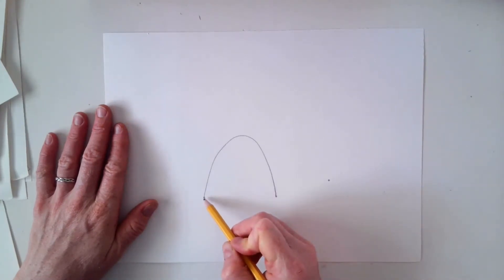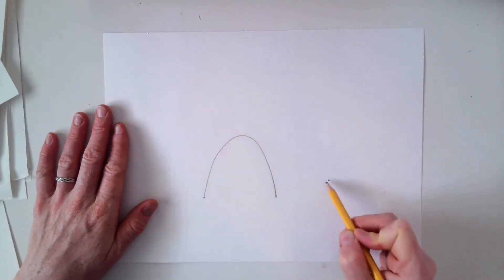You're going to take your pencil and draw a line that goes all the way over the tent to this line, like this.